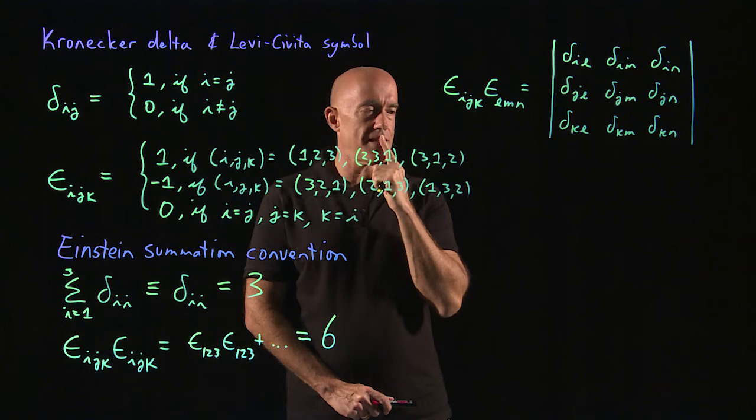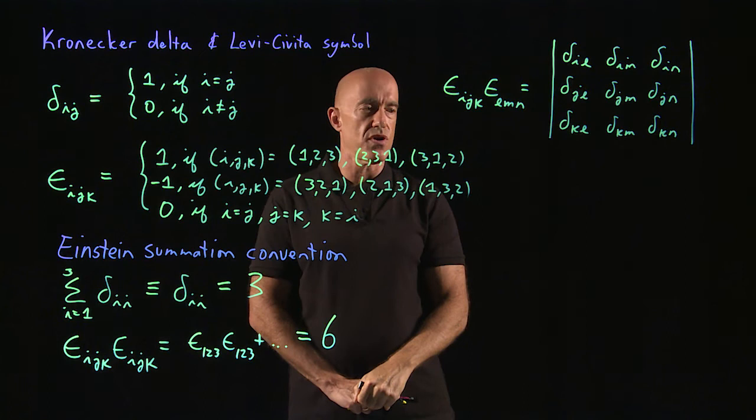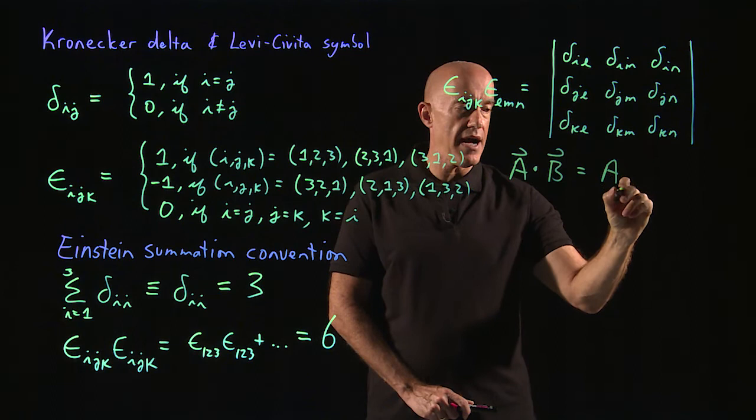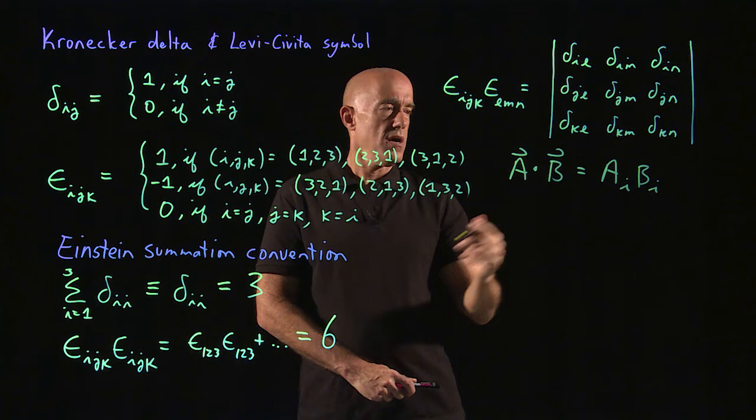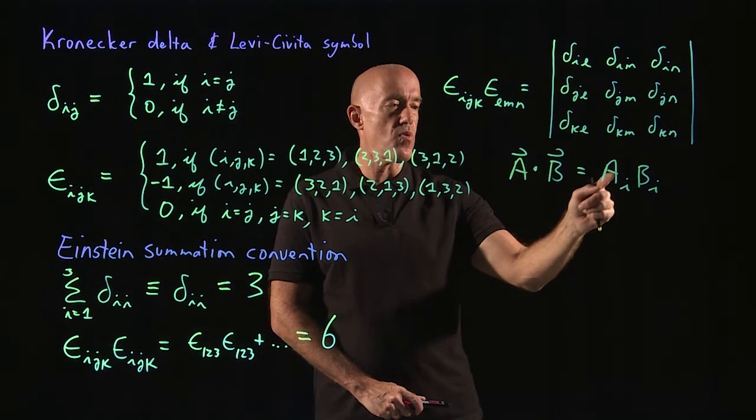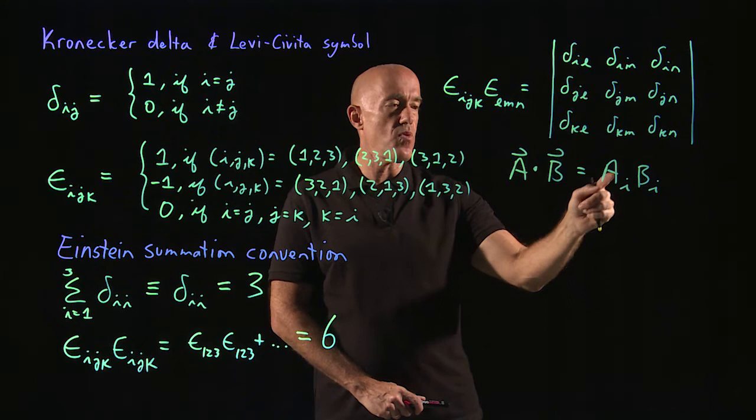The last thing I want to do is relate this to the dot product and the cross product. The dot product A dot B, let me just write that as A_i B_i, because this will be what I commonly do later. What this means, A_i B_i, we're going to be working under the Einstein summation convention. So that means A_1 B_1 plus A_2 B_2 plus A_3 B_3. That's the dot product, right?